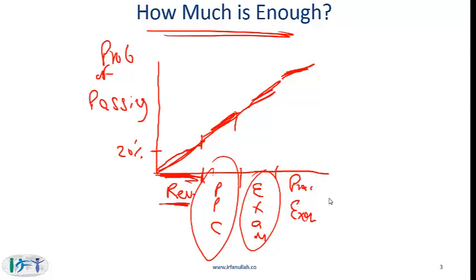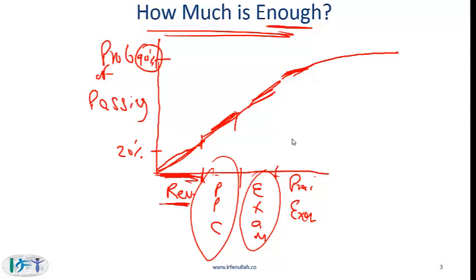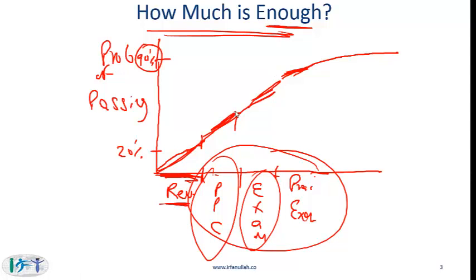Coming back to the question of how much is enough: as you keep practicing, if you've done all these things I've mentioned, your probability of passing is pretty high — around 90% to 95%. As you keep practicing more there are diminishing returns; the more you do the higher the probability, but there is never a guarantee. So the bottom line is you do as much as you can, but keep in mind that certain things give you a greater bang for the buck than others.